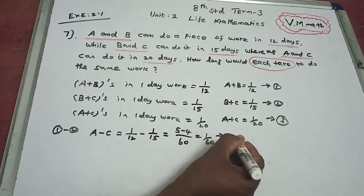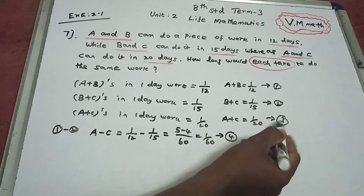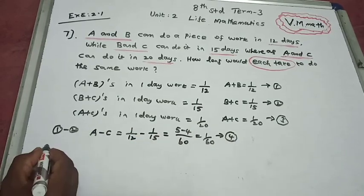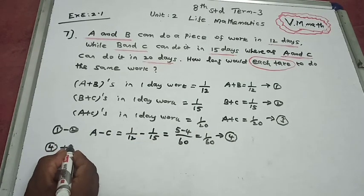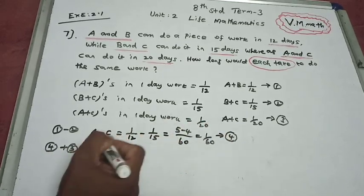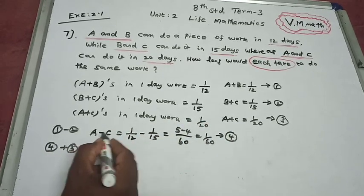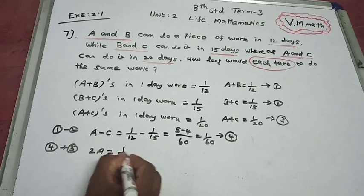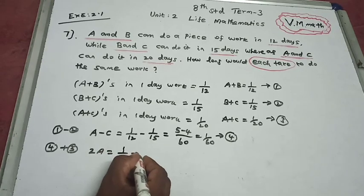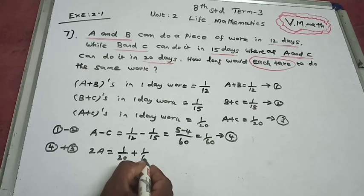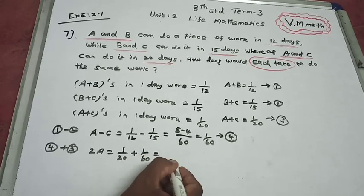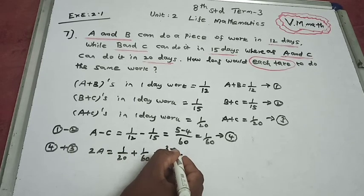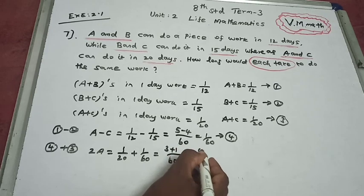Now adding equation 3 (A plus C = 1/20) to A minus C = 1/60 gives 2A. The right-hand side: 1/20 plus 1/60. LCM is 60: 3 multiplied gives 3/60, plus 1/60 equals 4/60.